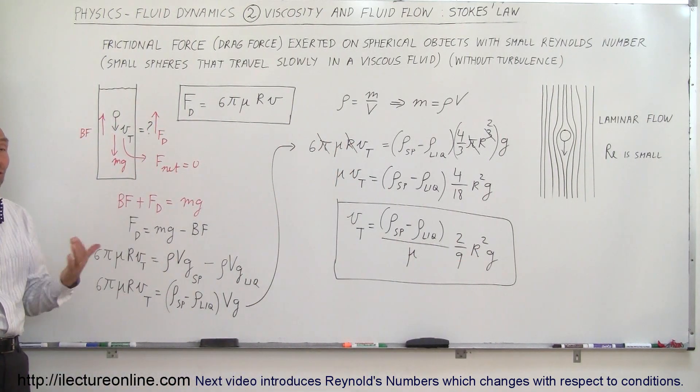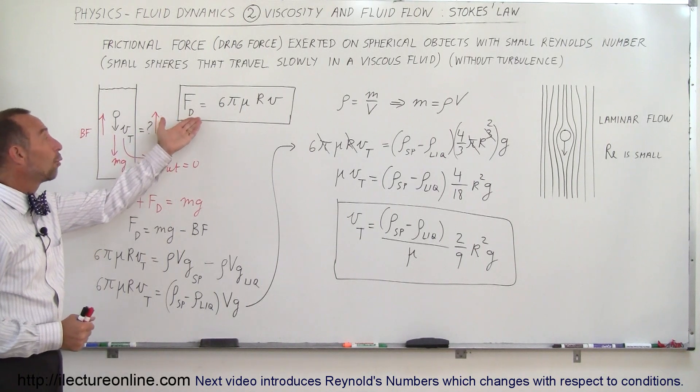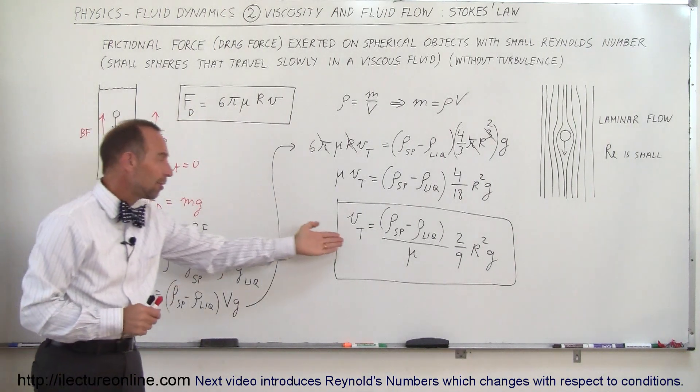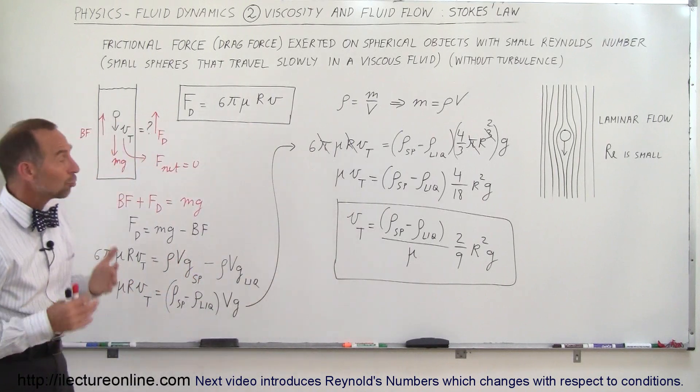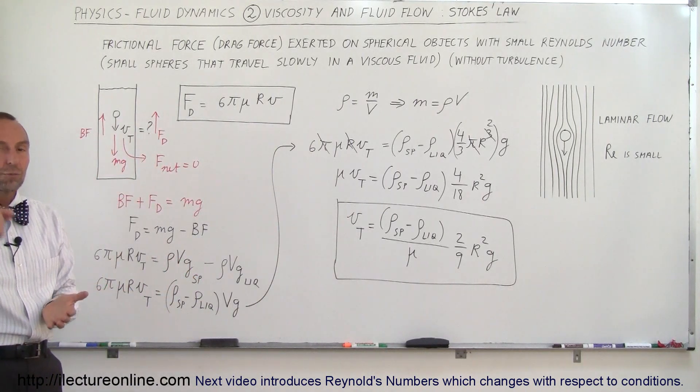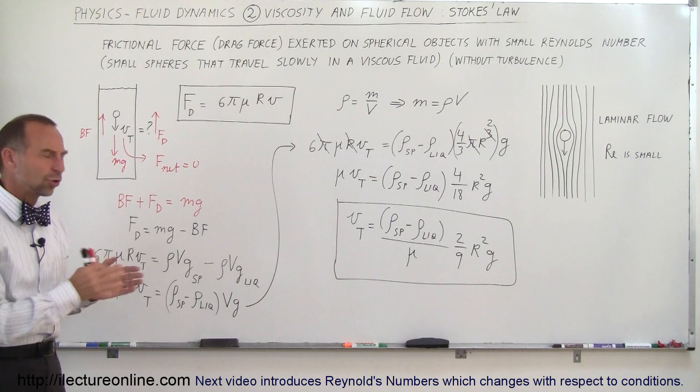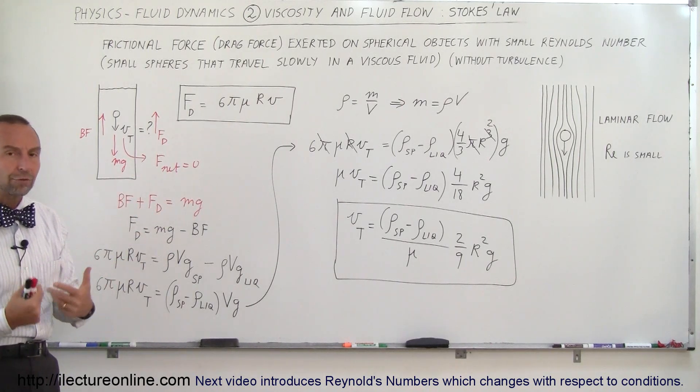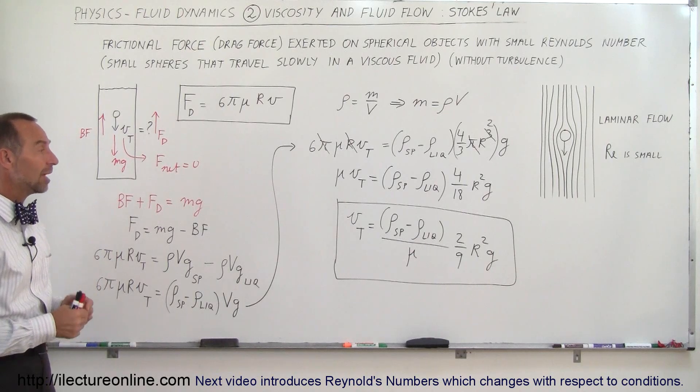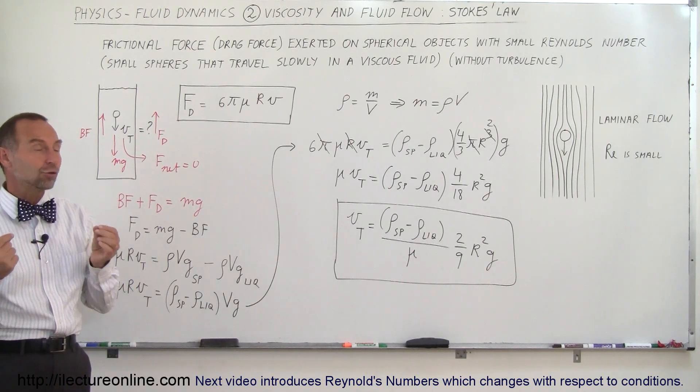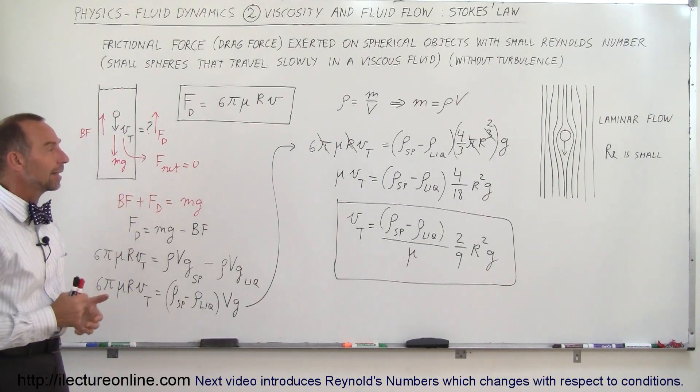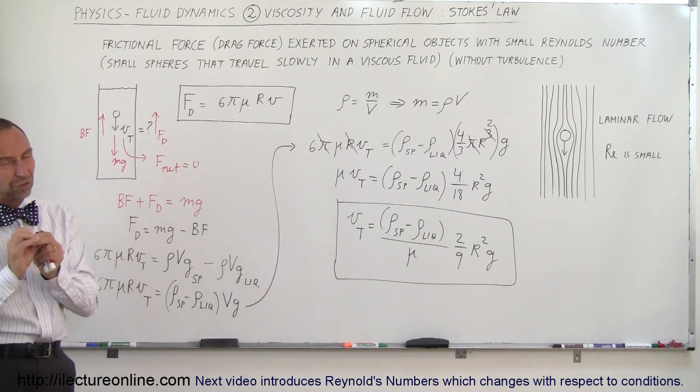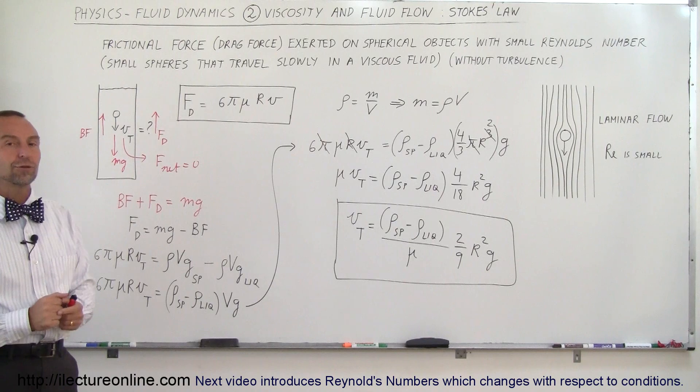And so Stokes Law now gives us two things: it gives us the force of the drag on an object moving through a liquid like that, and secondly, from it we can calculate the terminal velocity of an object moving through a liquid. Later on I'll show you some examples where I actually apply these two equations so you get more familiar with them. But at least in this case you can see how yes, Stokes Law is a very useful law that allows us to calculate several things about the movement of small objects, typically spherical type objects, through a viscous fluid.